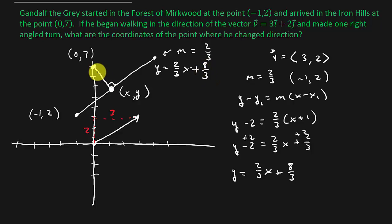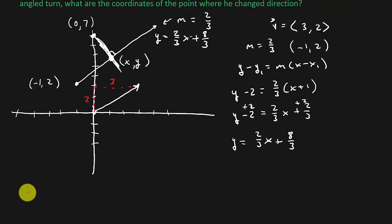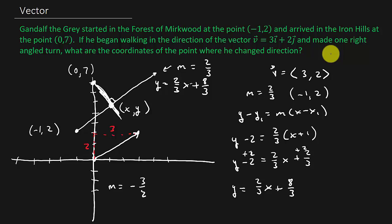Now we need to find the equation of this line right here. Well, we know that the slope of that line is -3/2. How do we know the slope of this line is -3/2? Well, it says in the problem he made one right angle turn. So that means this line and this line are perpendicular. And remember, lines that are perpendicular, their slopes are negative reciprocals of each other. So if the slope of this line is 2/3, then the slope of this line right here is -3/2.